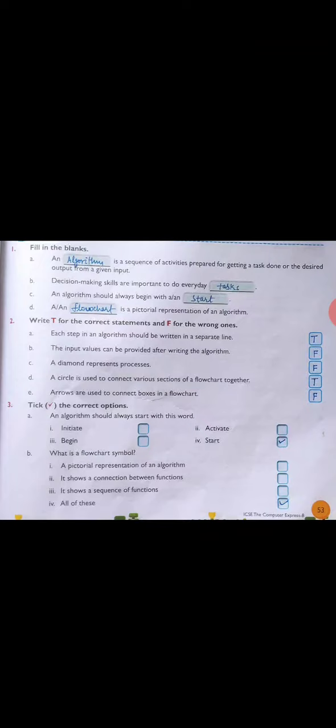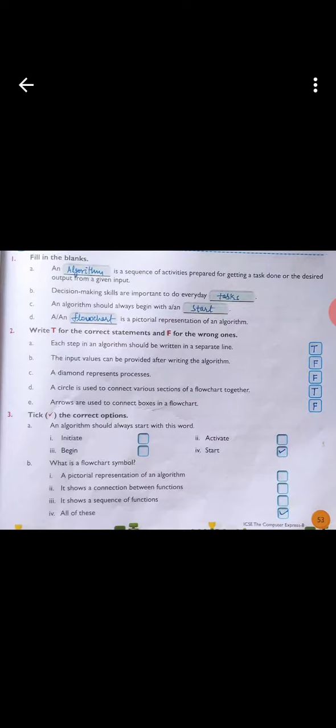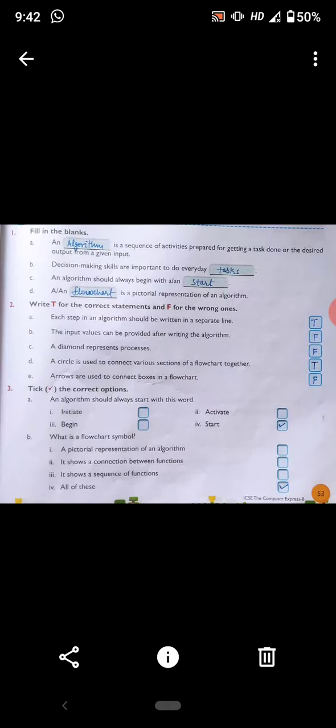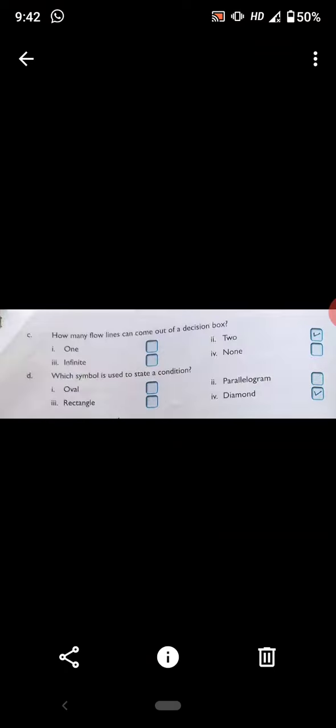start. What is a flowchart symbol? A pictorial representation of a thing, it shows a connection between functions, it shows a sequence of functions, all of these - the fourth option, all of these. How many flow lines can come out of a decision box?